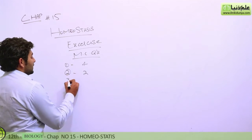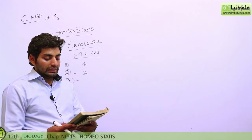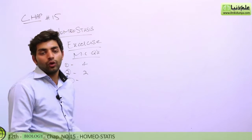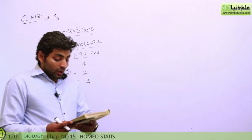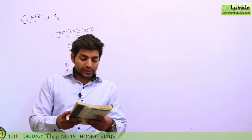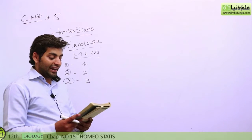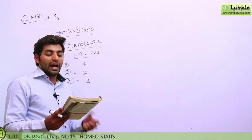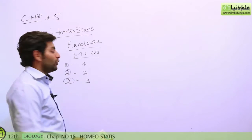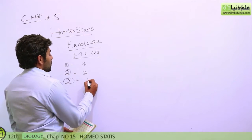The third MCQ asks which of the following is the main excretory organ contributing to elimination of waste in plants — the answer is C, leaves. The fourth MCQ: the environment where animals produce a large volume of diluted urine is a hypotonic environment, so the answer is option 1.